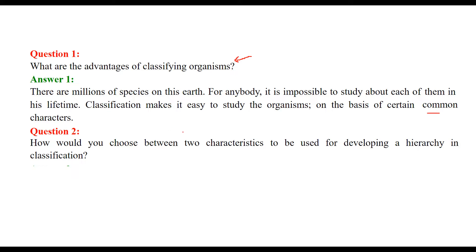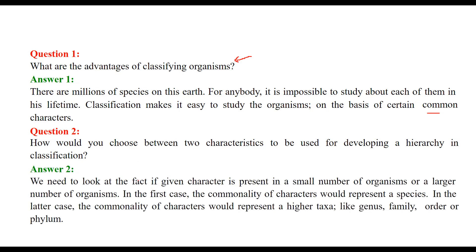How would you choose between two characteristics to be used for developing a hierarchy in classification? We have to look at whether a given character is present in a small number or a larger number of organisms. If characters are common to fewer organisms, they represent a species. If common to more organisms, they represent a higher group like the genus, family, order, or even the phylum.